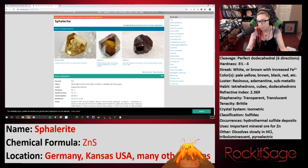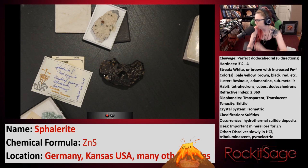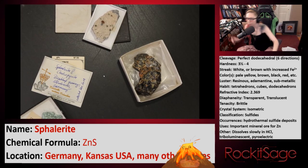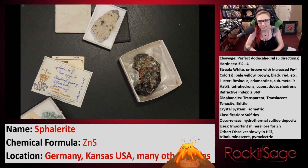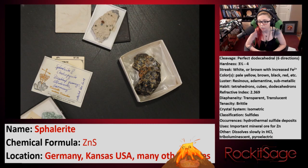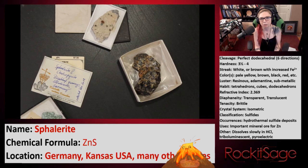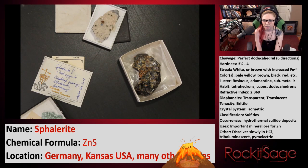These are a couple of samples of sphalerite. This more common darker type I'll put in a white box so you can see it more easily. It forms tetrahedrons, cubes, and dodecahedrons depending on the space and available constituents. Its refractive index is 2.369, which is exceptionally high, which makes sense since it can be submetallic. Diaphaneity is how much light can transmit through the object. In this case it's transparent to translucent, but the more iron that's in it, the more metallic and less translucent it becomes — more opaque.